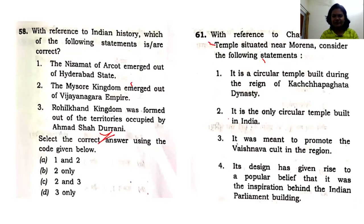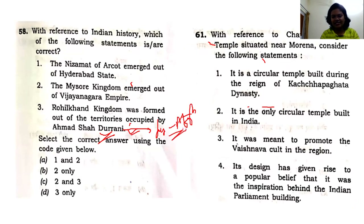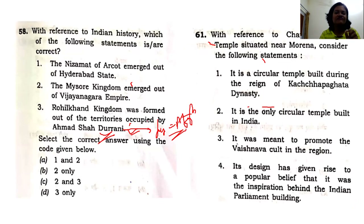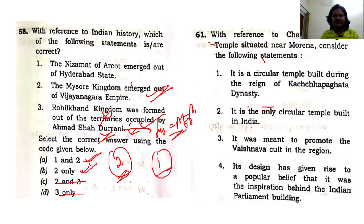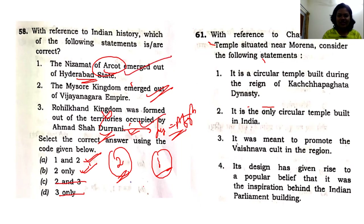The next question is interesting because the third option — Rohilkhand kingdom connected to Durrani — may trap you. Ahmad Shah Durrani is a dynasty related to the Afghanistan region, and Rohilkhand kingdom has nothing to do with him. Rohilkhand kingdom is related to Ali Muhammad Khan. Unless you know that person, you'll fall into the trap. Eliminating option three, option two is definitely right. And Nizam of Hyderabad arose from the Deccan court as a subsidiary — so the answer is options one and two.